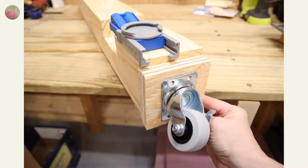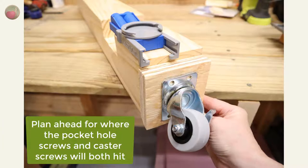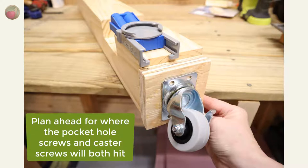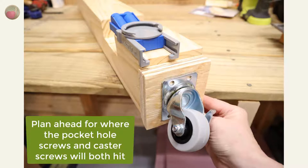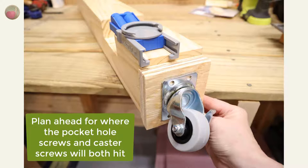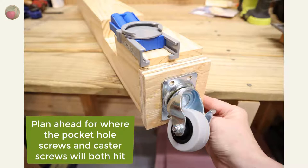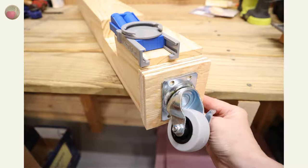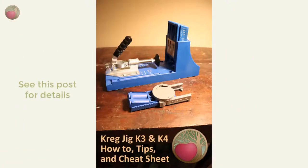And you don't want the screws for the caster to hit the pocket hole screws for the legs either. So, you need to plan for where all these screws are going to hit. You can only get just so close to the edge of the leg with pocket holes. So, you may need to do a bit of planning before you even drill the pocket holes. Go see my post on the Kreg Jig K3 and K4 How-To Cheat Sheet and Tips for details on how to align a K3 jig.